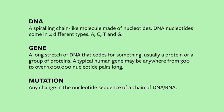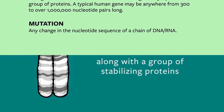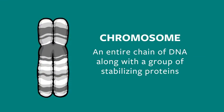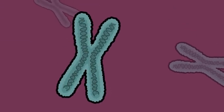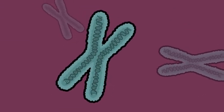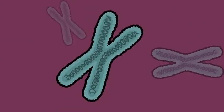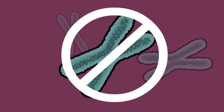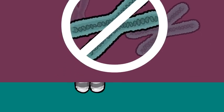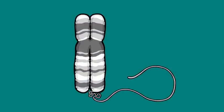Now that you clearly understand these three terms — and feel free to pause the video to study them if need be — it is now time to talk about chromosomes. A chromosome is an entire chain of DNA along with a group of stabilizing proteins. You may have seen images showing DNA trapped inside a chromosome, sort of like this. This is not how chromosomes hold their DNA. If you were to unravel a chromosome,